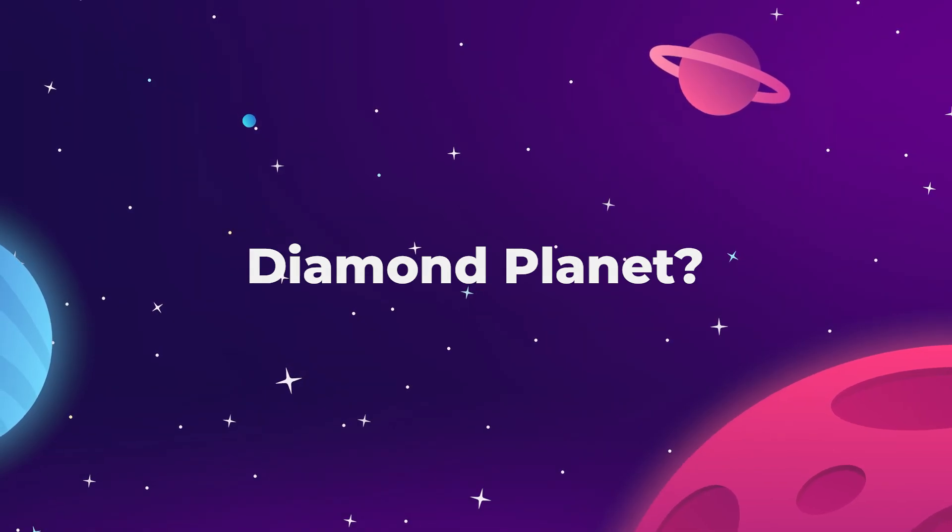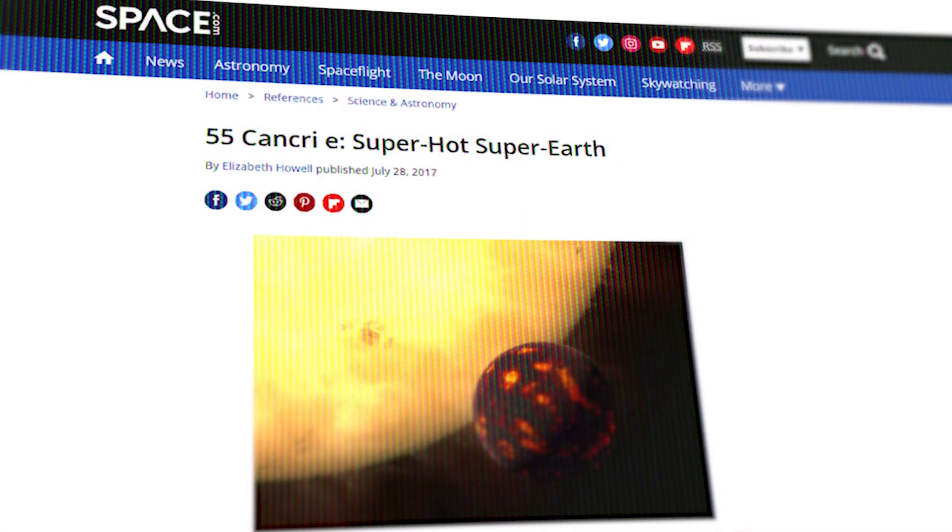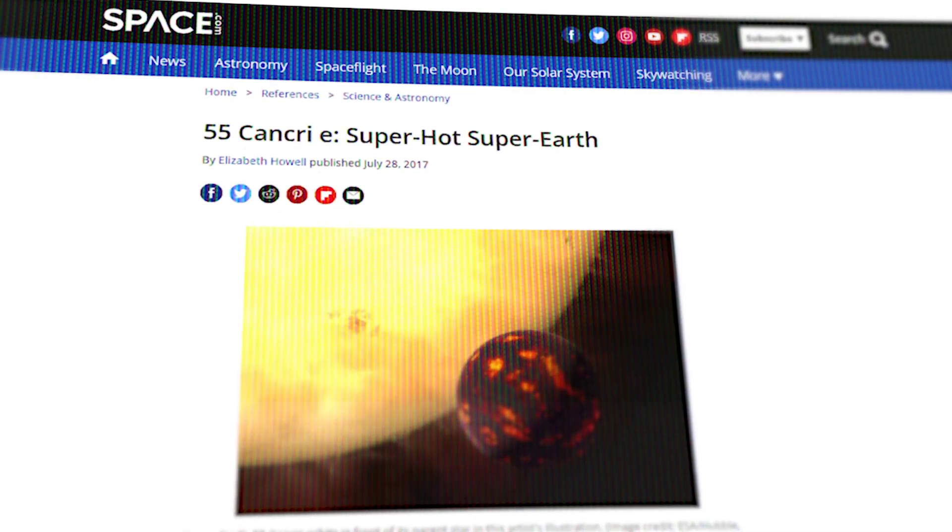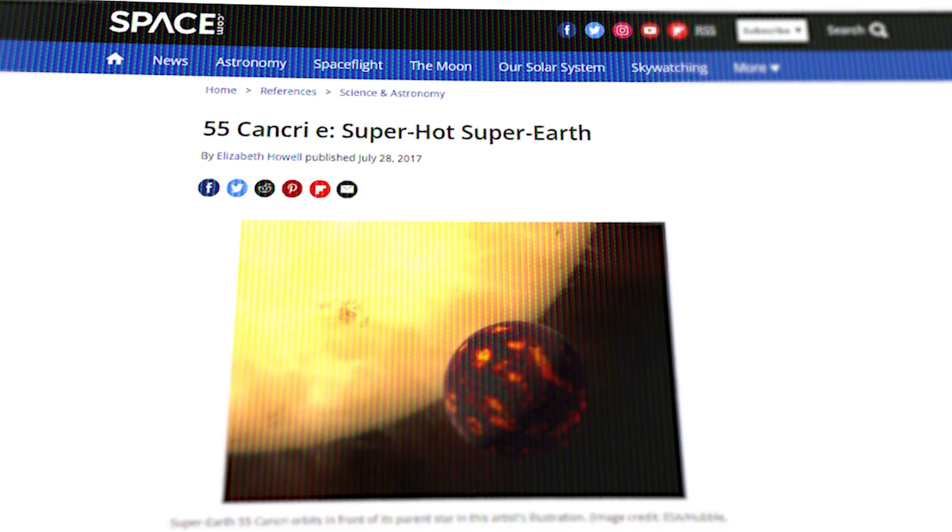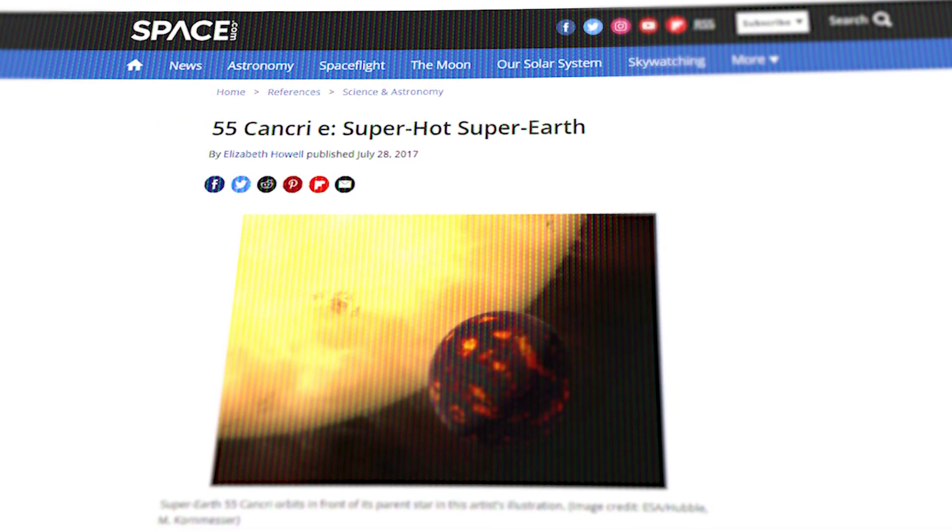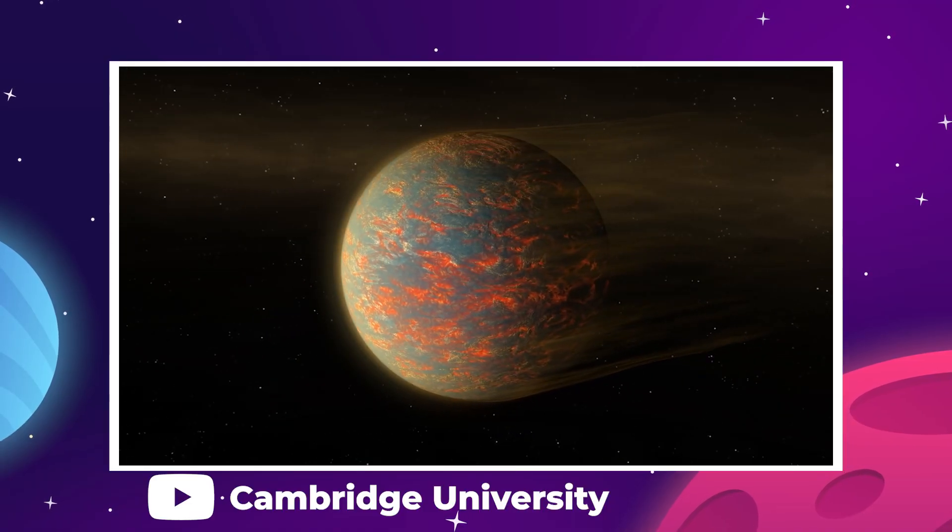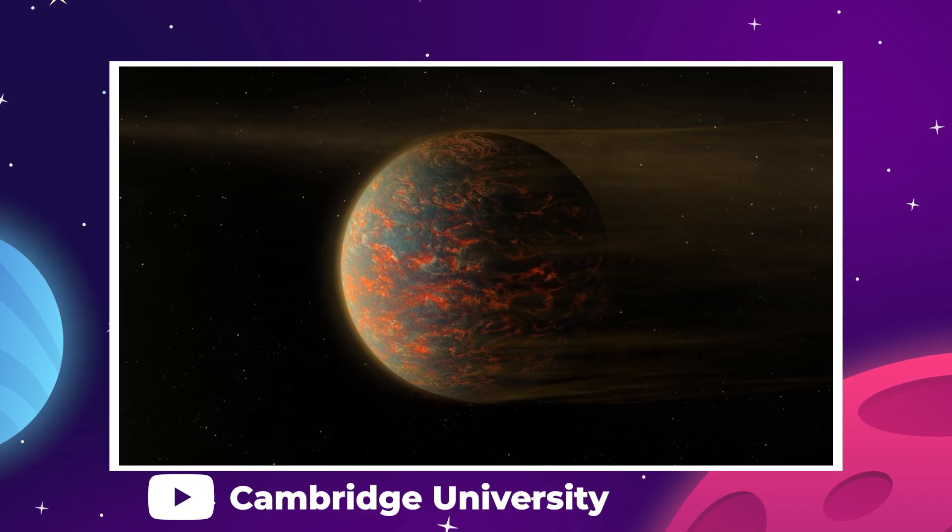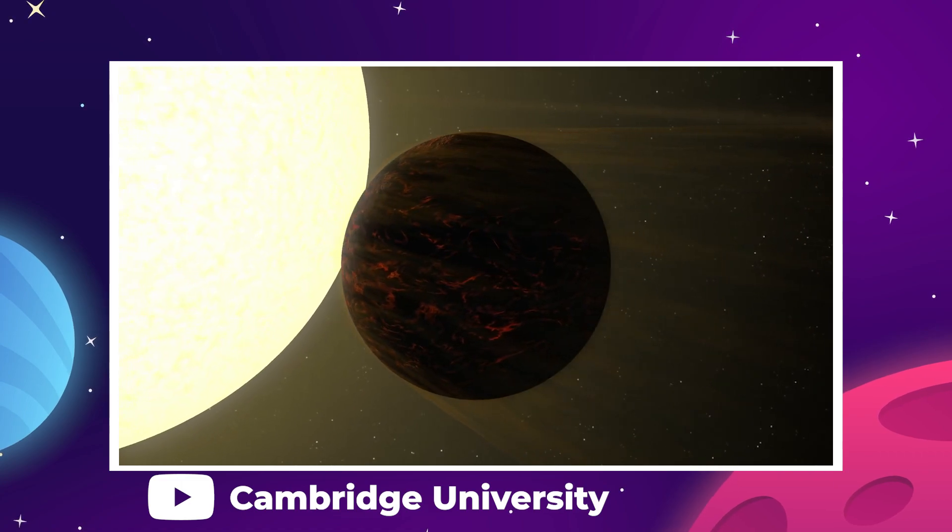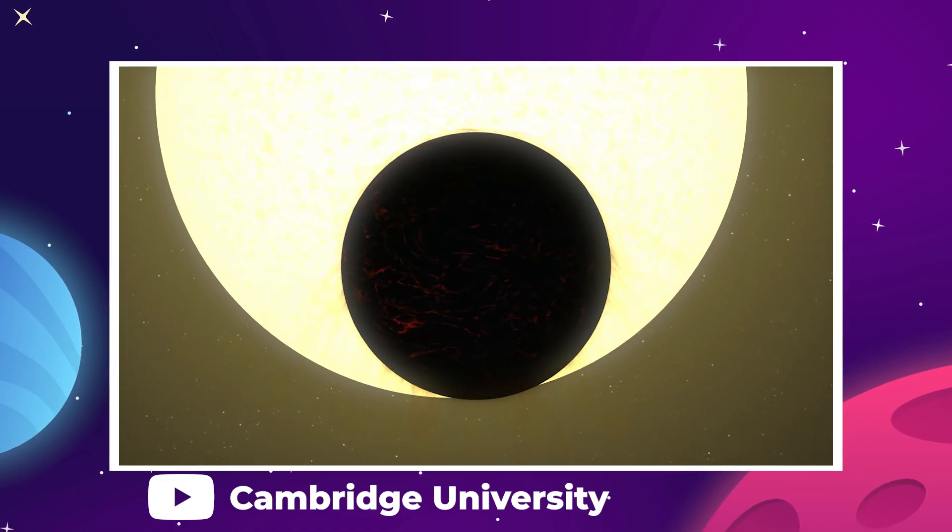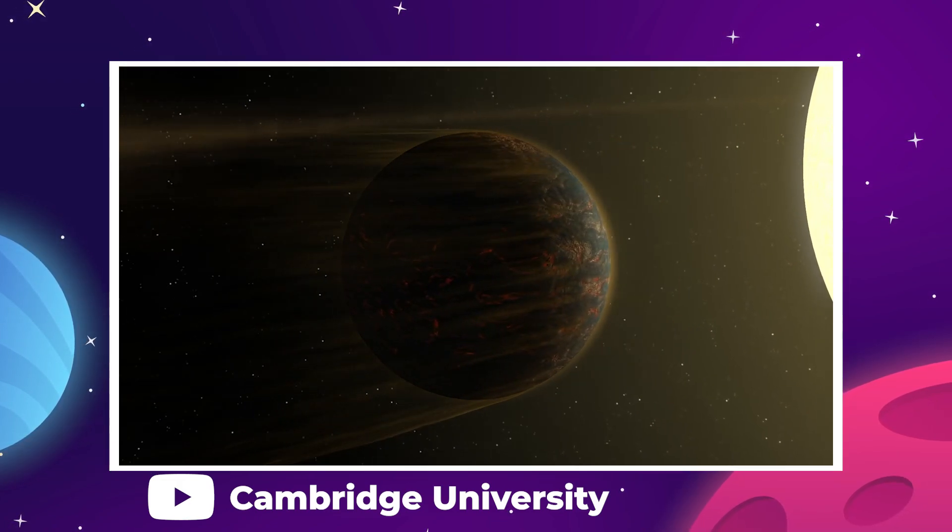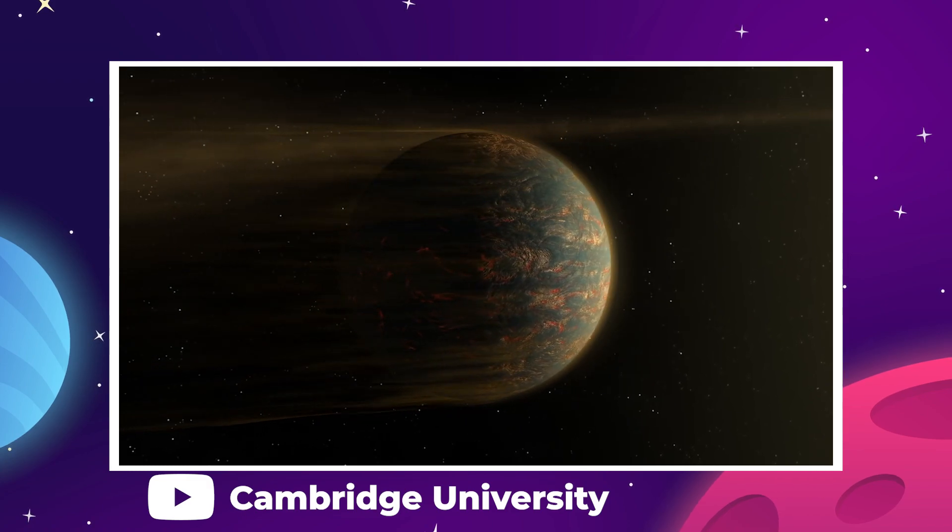Let's talk about 55 Cancri e. This super-hot super-Earth has been known as the diamond planet because of a theory that carbon in the surface has been so heavily compressed and heated by the nearby star that it's formed into solid diamond. The exoplanet is incredibly close to its star, orbiting once every 18 hours, and that ramps the surface temperature up to around 4900 degrees Fahrenheit. So if the planet had an extremely high carbon concentration, then the conditions would be there for it to form into diamond.